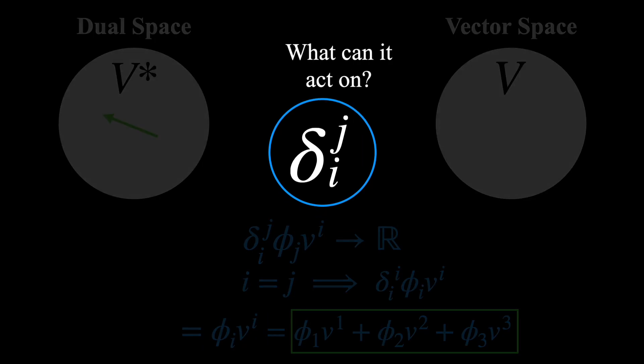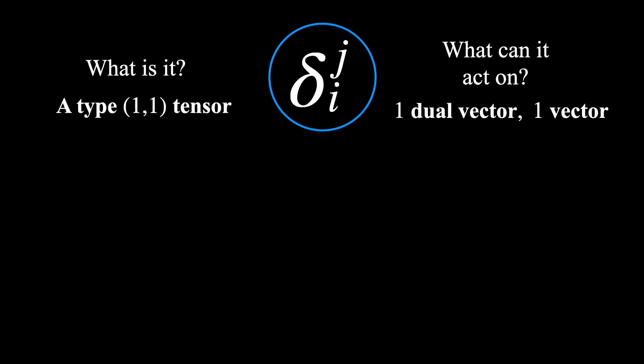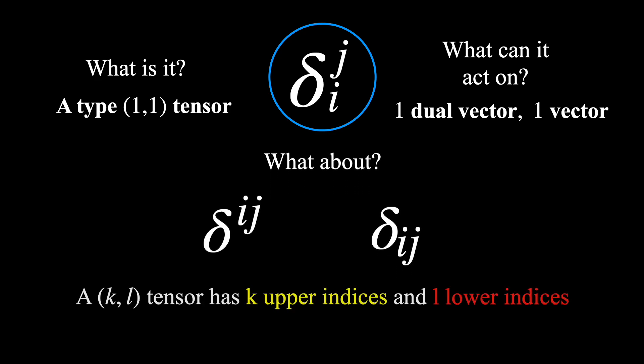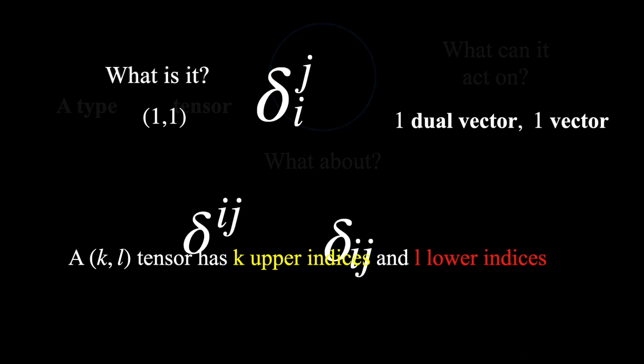Okay, now that we have answered these two questions for the Kronecker Delta tensor of this form, what about the other two forms? Well, we simply need to apply the new Einstein notation rule.